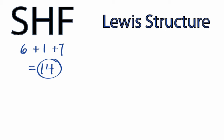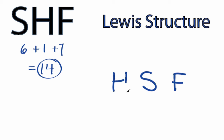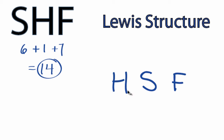Hydrogen atoms always go on the outside of Lewis structures. When we look at sulfur and fluorine, since sulfur is less electronegative, we'll put that at the center, and we'll put the fluorine on the outside, and the hydrogen here on the outside as well. So we have 14 valence electrons for the SHF Lewis structure.